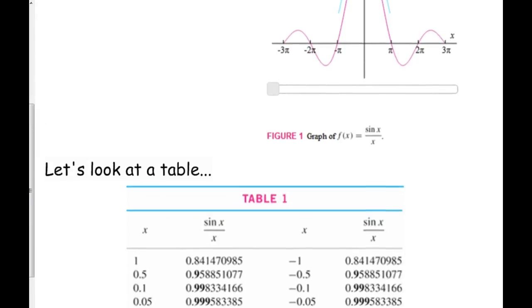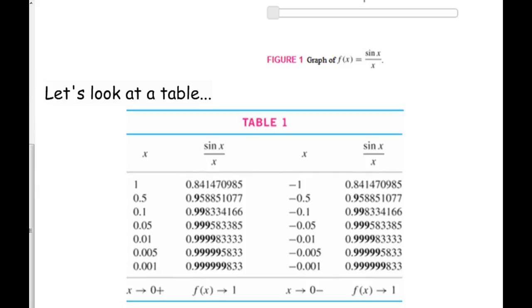So we can also see this on a table. This is a table of values. I just want you to look at it for a second. If you start at x equals 1, and notice our x values are getting closer and closer to 0. They're getting smaller and smaller x values. Look at what the y values are doing. They're getting closer and closer and closer to a y value of positive 1. So it's 9 after the decimal. The same thing happens from the left side. If we start with negative 1 and we're getting closer and closer to 0 on the left side, then our y values are still approaching positive 1.